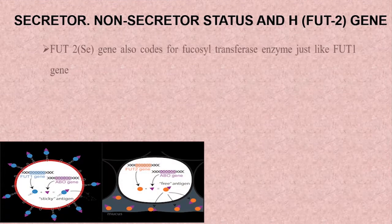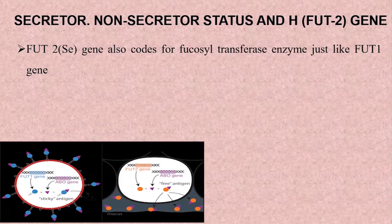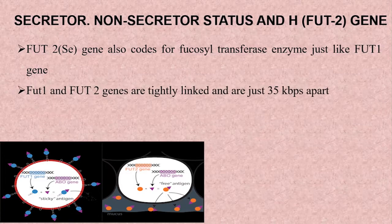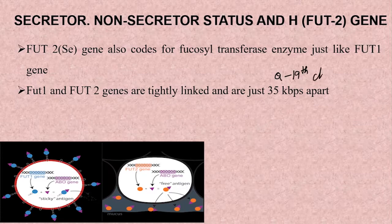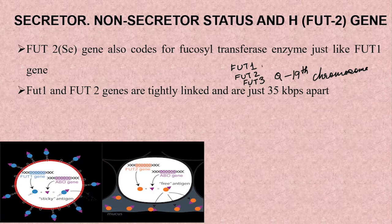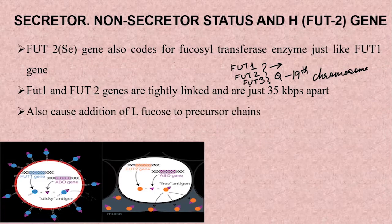Now let us discuss another condition expressed by another FUT gene — the FUT2 gene, also known as the secretor gene, expressed in the Se form. The FUT2 gene also codes for fucosyltransferase enzymes, just like the H gene or FUT1 gene. These two genes, FUT1 and FUT2, are so tightly linked that they are just 35 kilobases apart, both located on the q arm of the 19th chromosome in the same region.